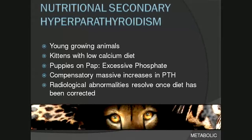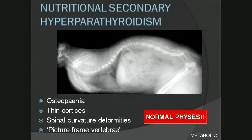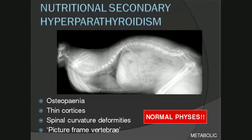The radiological abnormalities can resolve once the diet has been corrected. Signs include diffuse osteopenia mainly affecting the appendicular skeleton. On the radiograph of this cat, there is very little difference in opacity between the bone and soft tissue — almost ghost-like compared to a normal animal where the skeleton would be much more mineralized. Bone cortices are thinned, and there can be spinal curvature deformities. The term 'picture frame vertebra' implies that the cortices look like a little box with a radiolucent interior.